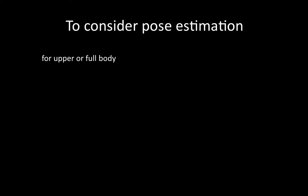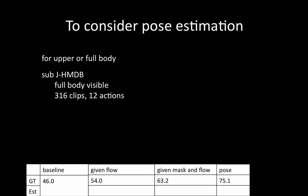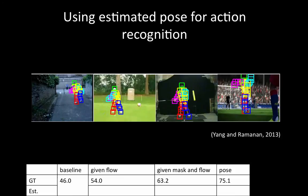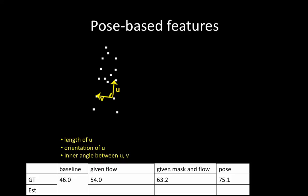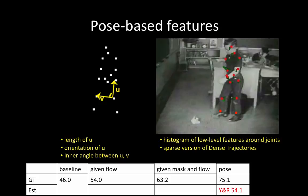Now, we consider pose estimated from state-of-the-art algorithms. Existing pose estimation algorithms focus on upper body or full body. We focus on the full body and consider a subset of JHMDB that has the full body visible. We also perform the analysis described earlier for this subset and observe a similar performance gain over the baseline given ground-truth data. We run Yang and Ramanan's pose estimation algorithm. While current pose estimation algorithms are far from perfect, the pose features derived from estimated joints surprisingly outperform the baseline by 8%. This suggests that the state-of-the-art pose estimation algorithm is already good enough to help with action recognition. We also consider low-level texture features around the joints, similar to what is done in dense trajectories, but found that adding these texture features does not further improve the performance of pose features.